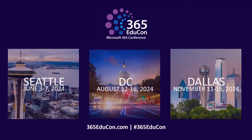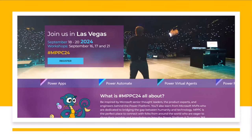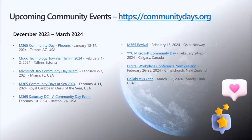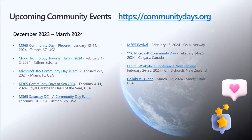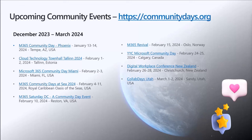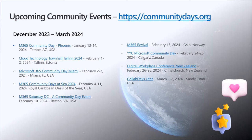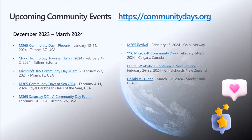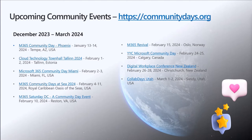There's also 365 EduCon happening next year in Seattle, DC, and Dallas in June, August, and November. Then we have the Power Platform Conference in Las Vegas, September 18th to 20th, 2024 — an awesome conference with a really cool keynote setup. On top of these primary conferences, we have community-led conferences happening throughout the world — great opportunities to engage with the community and present yourself. Check communitydays.org for all upcoming community events worldwide.